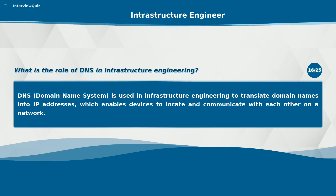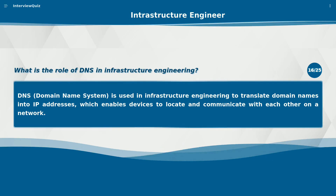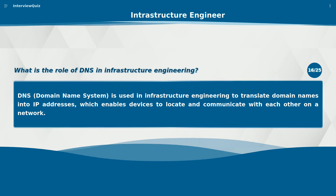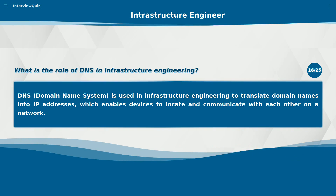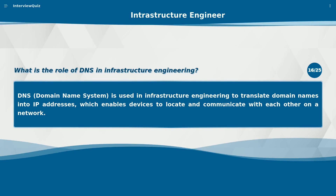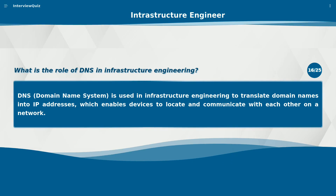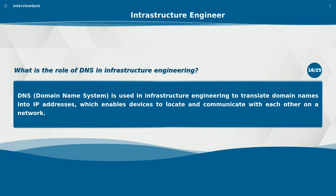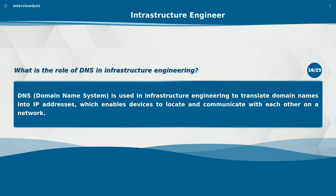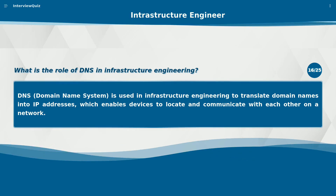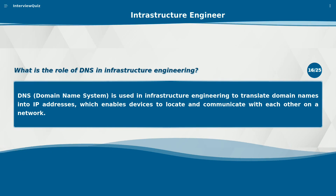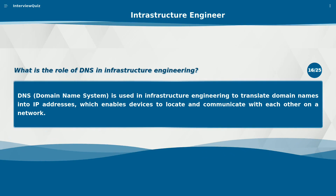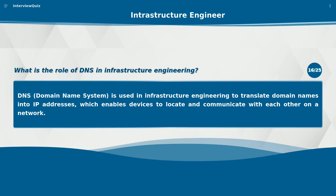What is the role of DNS in infrastructure engineering? DNS (Domain Name System) is used in infrastructure engineering to translate domain names into IP addresses, which enables devices to locate and communicate with each other on a network.